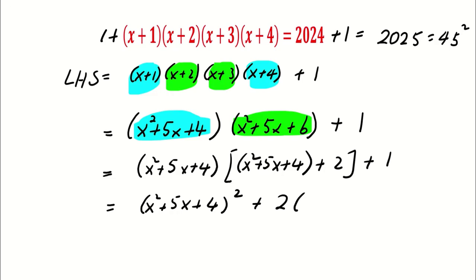Resulting in (x² + 5x + 4)² + 2(x² + 5x + 4) + 1. And this is equivalent to the square of (x² + 5x + 4 + 1).